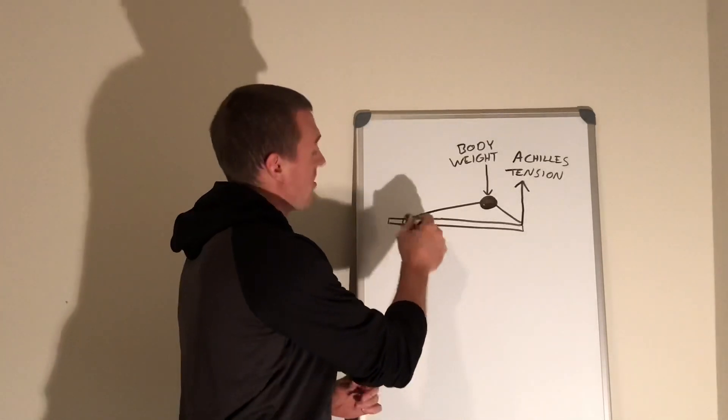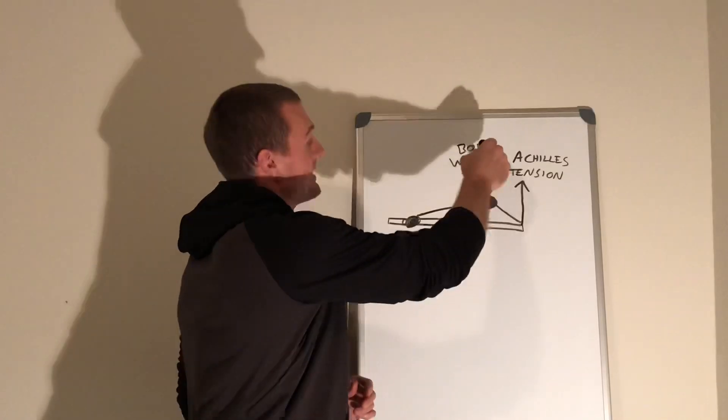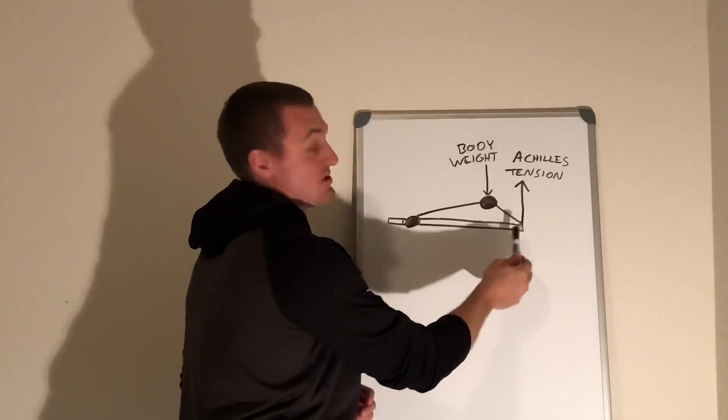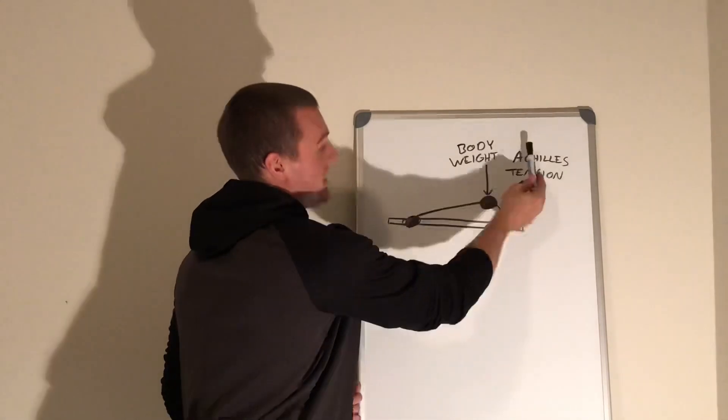So the axis of rotation is the ball of the foot. The load body weight is applied down at the ankle, and then Achilles tension, the effort, is pulling up on the heel.